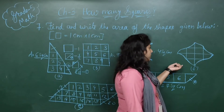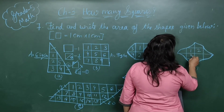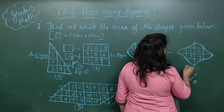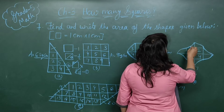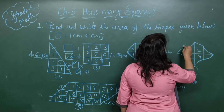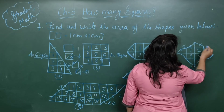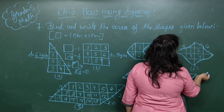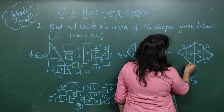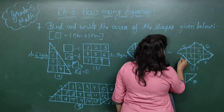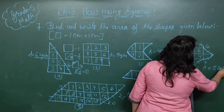Now see the last picture, F. The complete squares are 1, 2, 3, 4. Then more than half and less than half together make 5. More than half and less than half make 6. More than half and less than half make 7. Less than half and more than half make 8. So this shape has an area of 8 square centimeters.